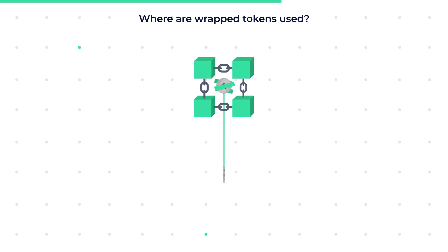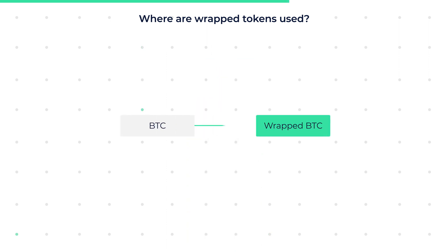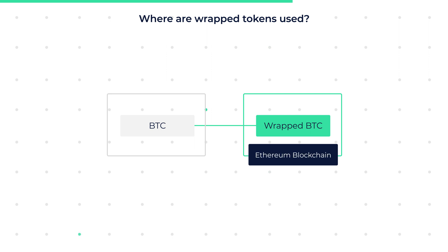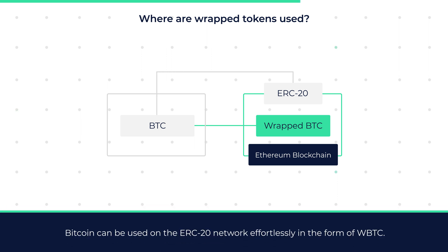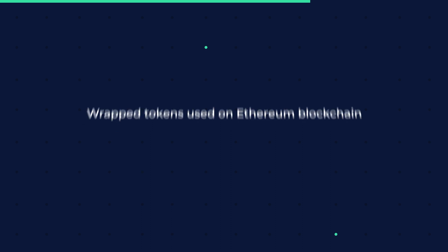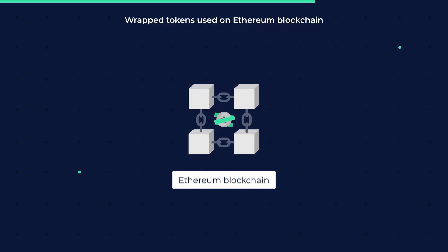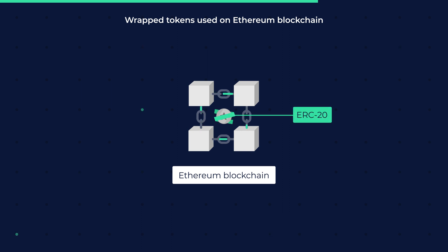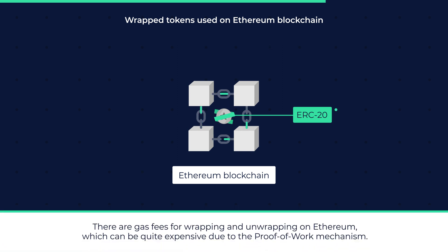Where are wrapped tokens used? Wrapped tokens are used on blockchains other than the original blockchain of the native token being pegged. For example, a wrapped BTC is simply a tokenized version of BTC existing on the Ethereum blockchain. The ERC20 token WBTC is pegged to the value of BTC, meaning Bitcoin can be used on the ERC20 network effortlessly in the form of WBTC. These are tokens native to their own blockchain being brought to Ethereum, made to comply with the ERC20 standard. There are gas fees for wrapping and unwrapping on Ethereum, which can be quite expensive due to the proof-of-work mechanism.